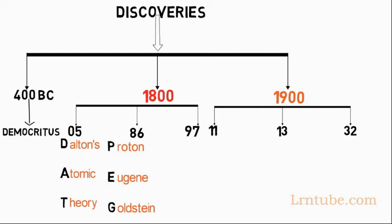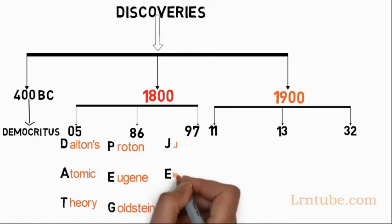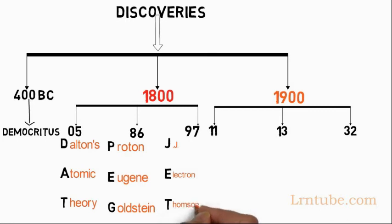In 1897, JE represents J.J. Thompson, Electron. In 1897, J.J. Thompson found the electron.